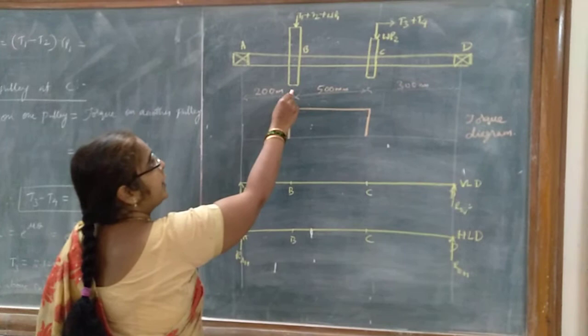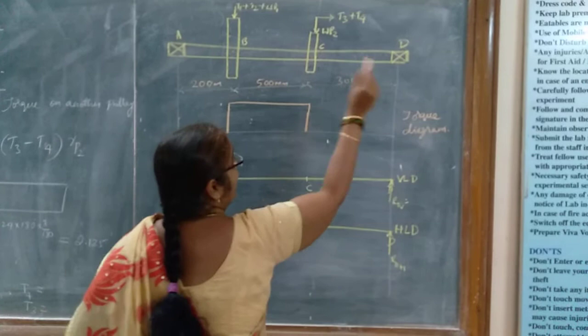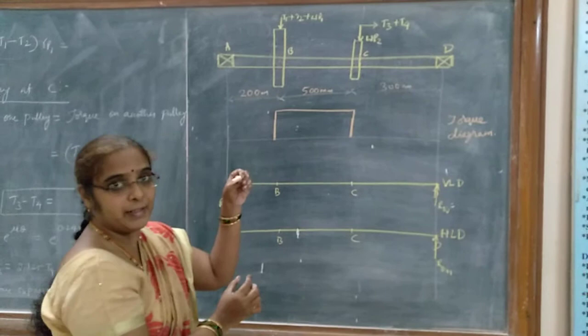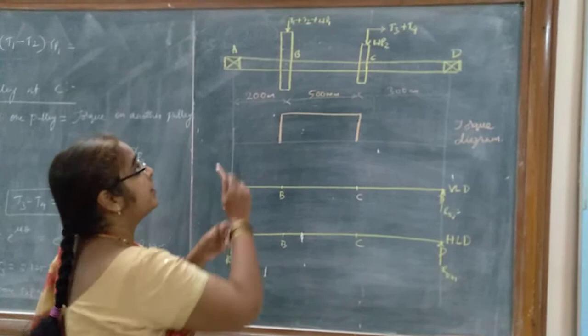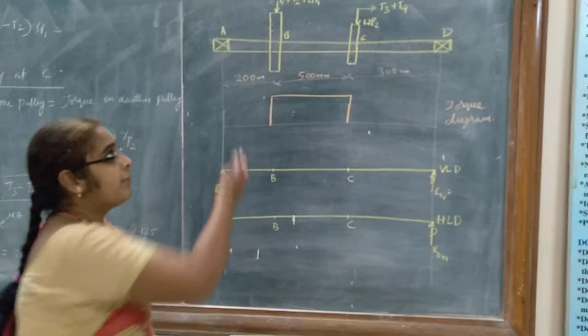The distance from the pulley to the left bearing is 200 mm, and the distance from this pulley to the right bearing is 300 mm. The total span of the shaft is 1 meter. Since this pulley is driving another pulley, there will be tension present in the belt — let us call those tensions T1 and T2. WP1 is the weight of the first pulley.